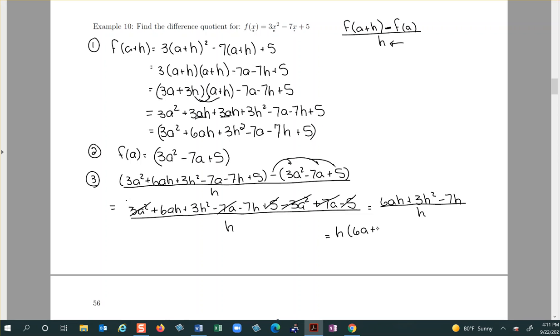So you have six a plus three h, because there were two to give up here so you only pull that one, minus seven, divided by h, and then cancel. So it's six a plus three h minus seven would be your final answer.